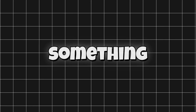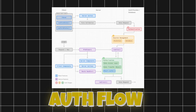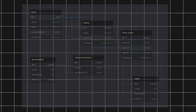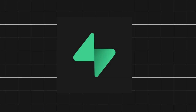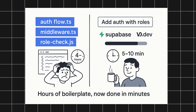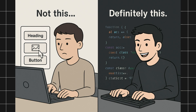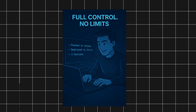Normally, setting up something like this takes hours — auth flow, middleware, role-based access. With v0.dev and Superbase, I shortcut all of that. This isn't a no-code video. This is AI-accelerating real code that you control.